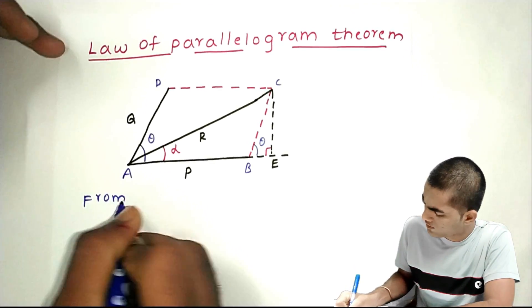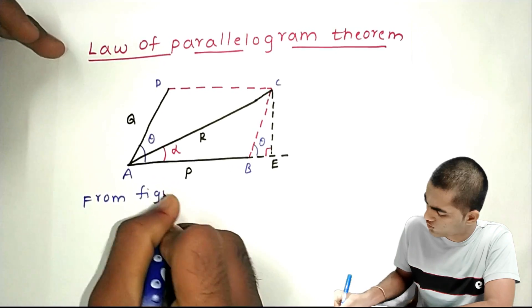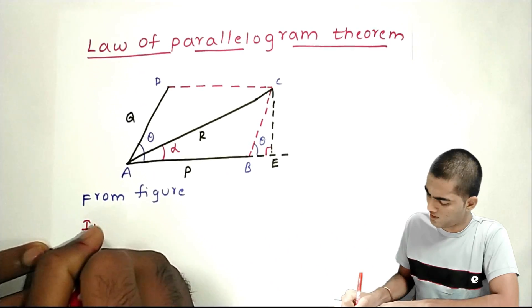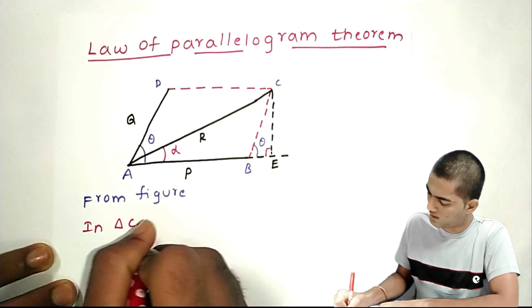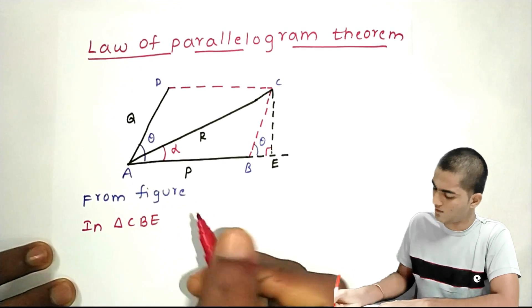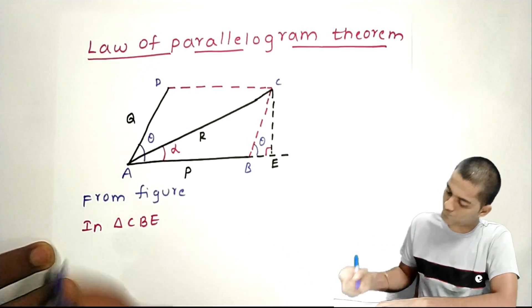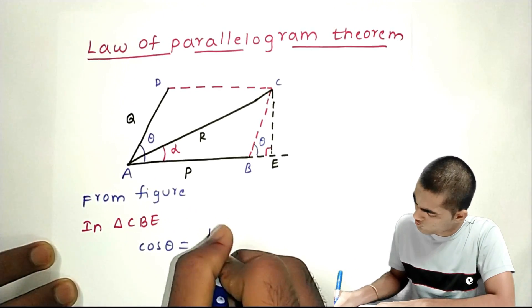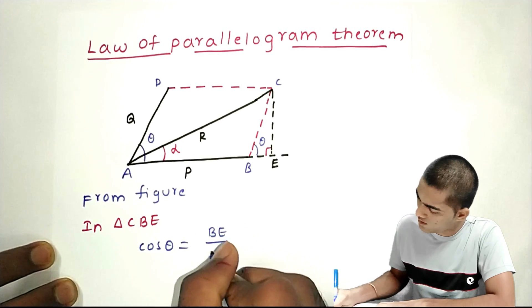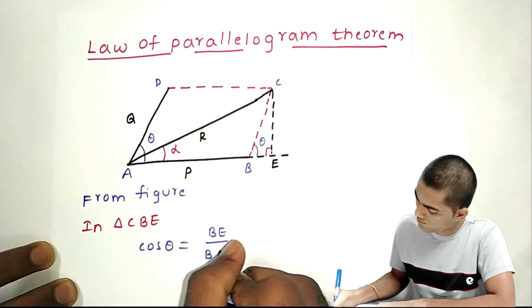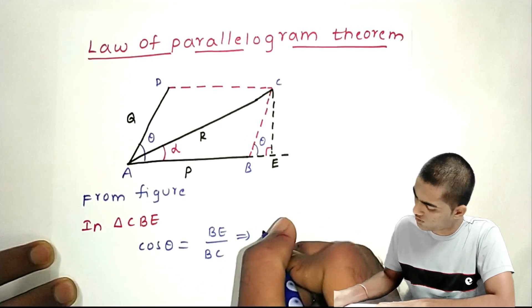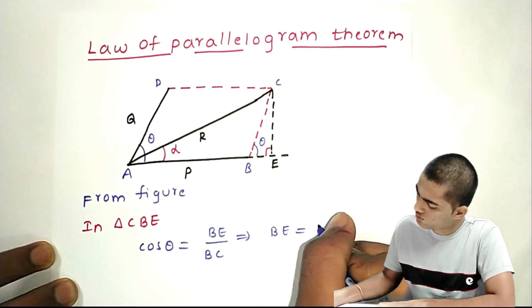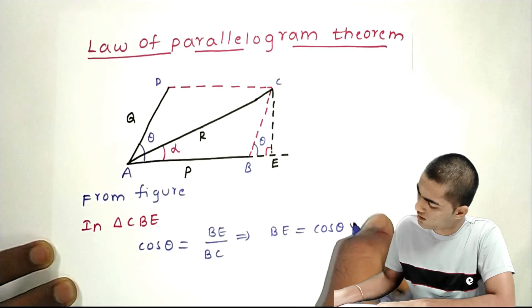From the figure, in right angle triangle CVE: cos theta equals CE divided by VC. Therefore, VE equals cos theta into VC.